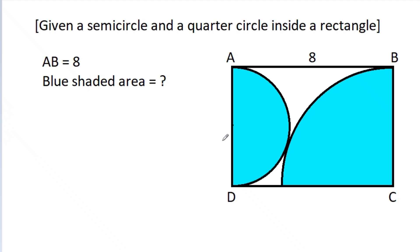In this video, we have been given a semicircle and a quarter circle inside a rectangle, and AB is 8. We have to find the blue shaded area.